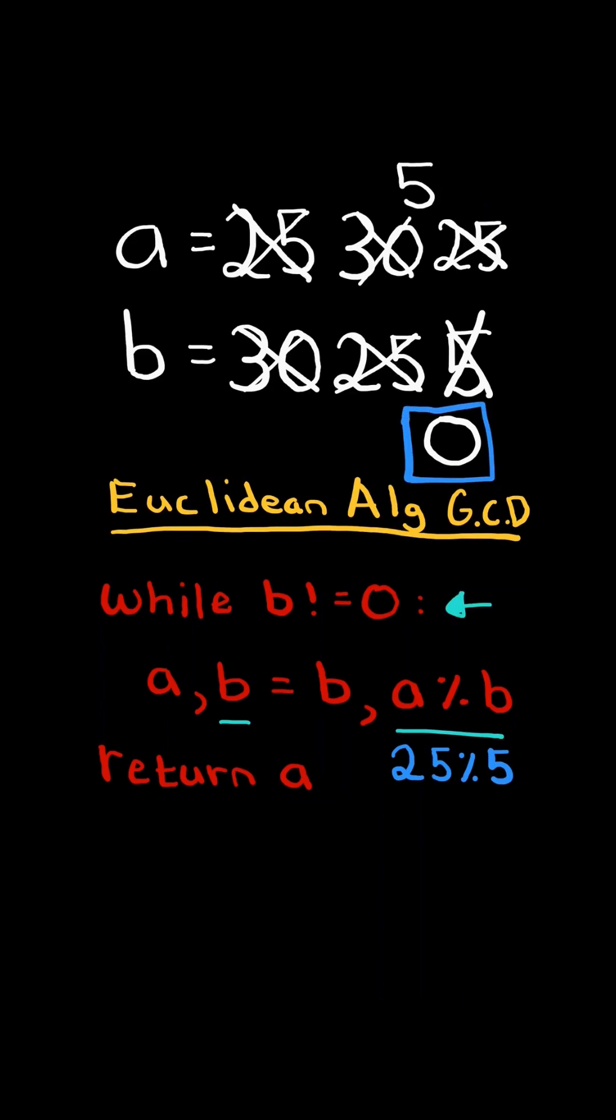Now since b equals 0, we stop the algorithm, and a will hold the greatest common divisor.